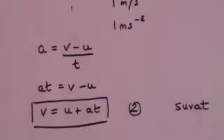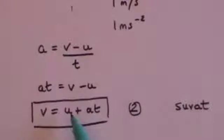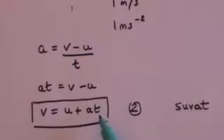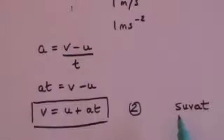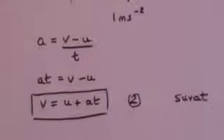In this second SUVAT equation — V equals U plus AT — we've got V (final velocity), U (initial velocity), A (acceleration), and T (time). The only value we haven't got in this particular formula is S, the distance.